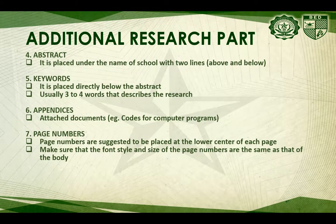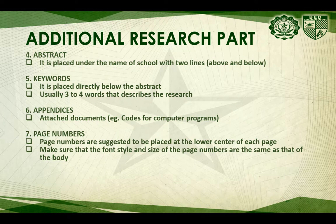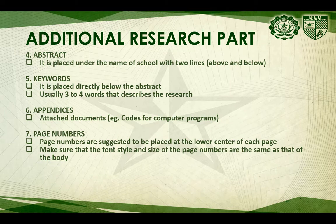The abstract is placed under the name of the school with two lines spacing. Keywords are placed directly below the abstract — usually three to four words that describe the research. Appendices are the attached documents, for example the codes for computer programs. Page numbers are suggested to be placed at the lower center of each page, and the font style and size of the page numbers must be the same as that of the body.